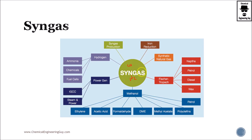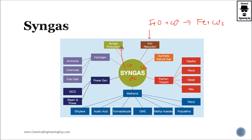Let's check this out. From syngas — remember this is CO and hydrogen, and at least you can have some CO₂ as well — you can use it for iron reduction. Remember that iron has some oxygen, so if you provide a reducing agent, you can produce some iron and CO₂ goes out as well. You can also sell syngas as a final product.